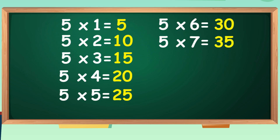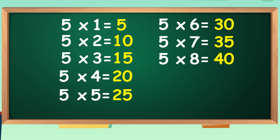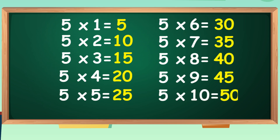Five sevens are thirty-five. Five sevens are thirty-five. Five eights are forty. Five eights are forty. Five nines are forty-five. Five tens are fifty. Five tens are fifty.